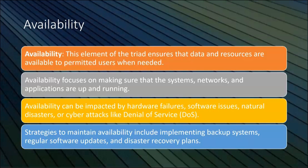Availability focuses on making sure that systems, networks, and applications are up and running, ensuring that data and resources are accessible to permitted users when needed. Availability can be impacted by hardware failures, software issues, natural disasters, or cyber attacks like a denial of service attack. Strategies to maintain availability include implementing backup systems, regular software updates, and disaster recovery plans.